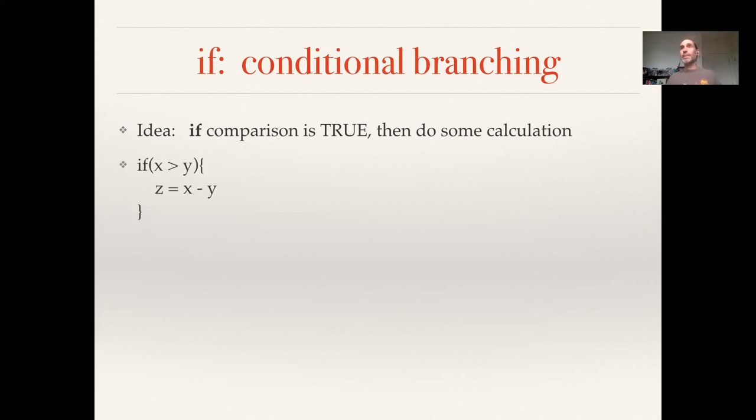So I could write a very simple bit of code here that says if x is bigger than y, then subtract y from x, so do x minus y, and store the result of that in z. So if x is smaller than y, we won't do this calculation—we don't calculate z at all—we only calculate z if x is bigger than y.